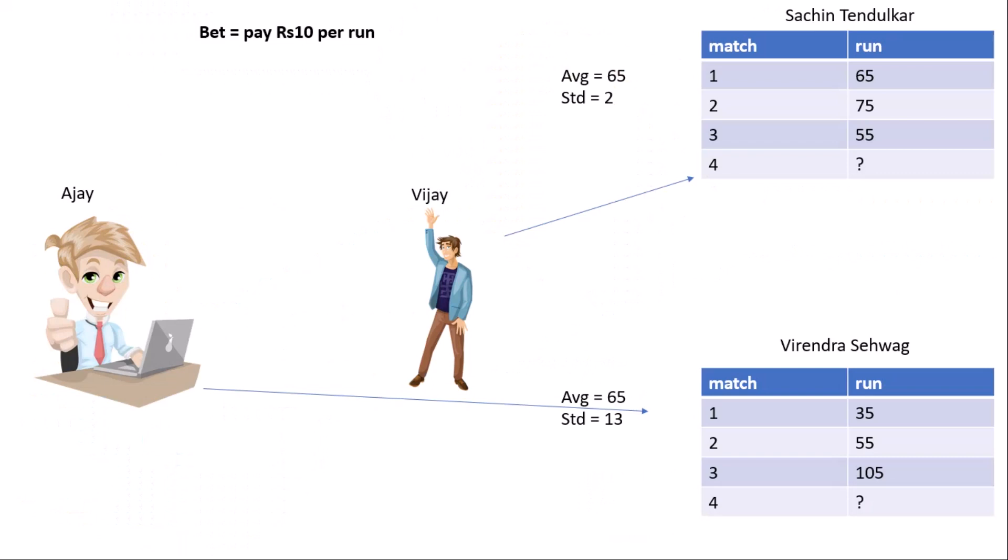And their runs: Sachin Tendulkar's runs in the first match is 65, second match 75, and third 55. Like this, this is the data of Virendra Sehwag.